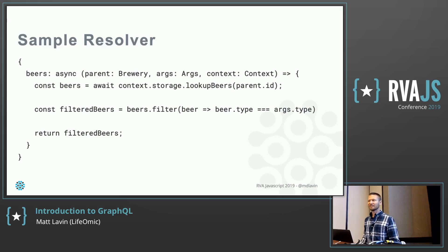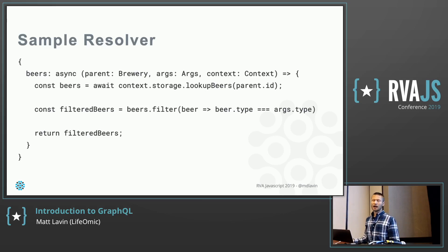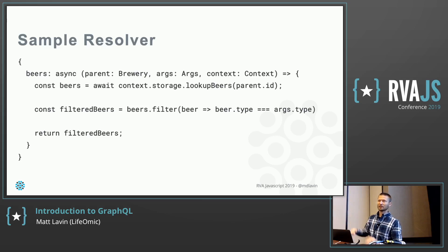Does anyone have questions about the high-level before I jump into showing an implementation in code? The question was: how would you do nested resolvers for nested complex types? I hope I can show that off in code, but the basic idea is that for each type you'll have an object of resolvers, and the engine will find the type to resolve and look it up. You always have type resolvers, type resolvers, type resolvers. If it's nested, the engine is smart enough to find the resolver by type and look down the tree.